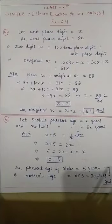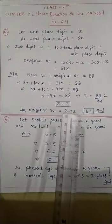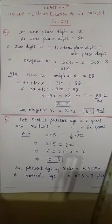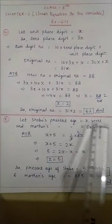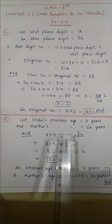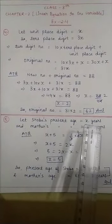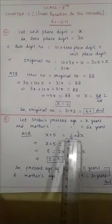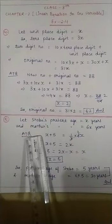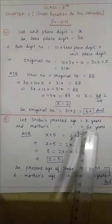Now I am reading question number 5: Shobo's mother's present age is 6 times Shobo's present age. Shobo's age 5 years from now will be one third of his mother's present age. What are their present ages? Let Shobo's present age = x years. So Shobo's mother's present age is 6 times x, which is 6x.